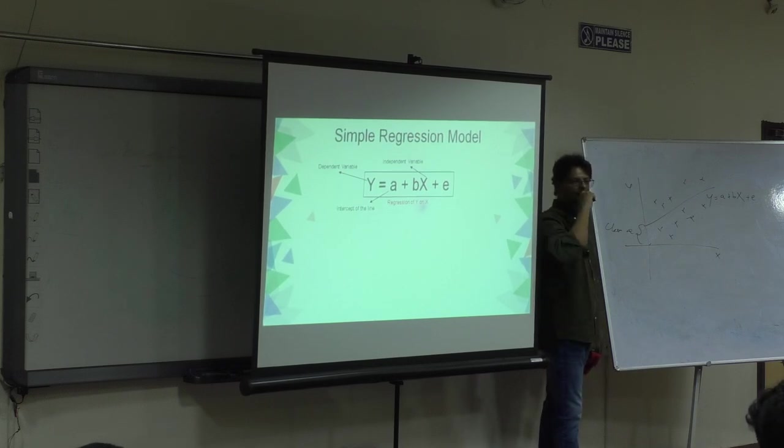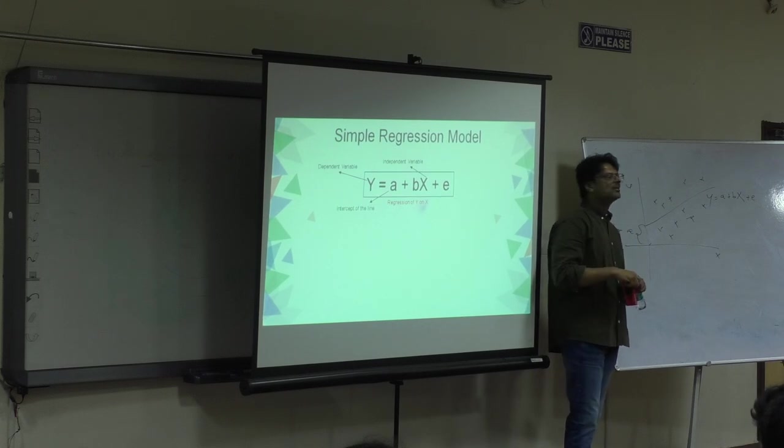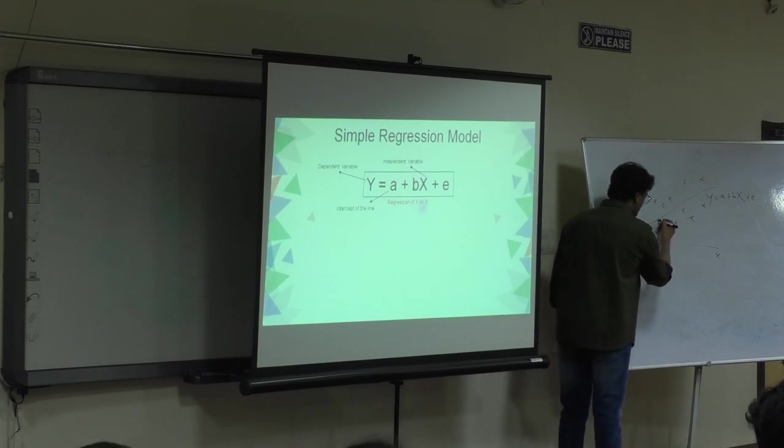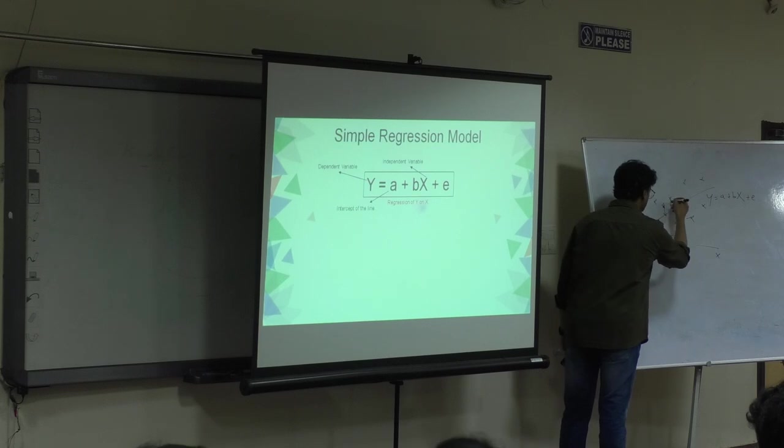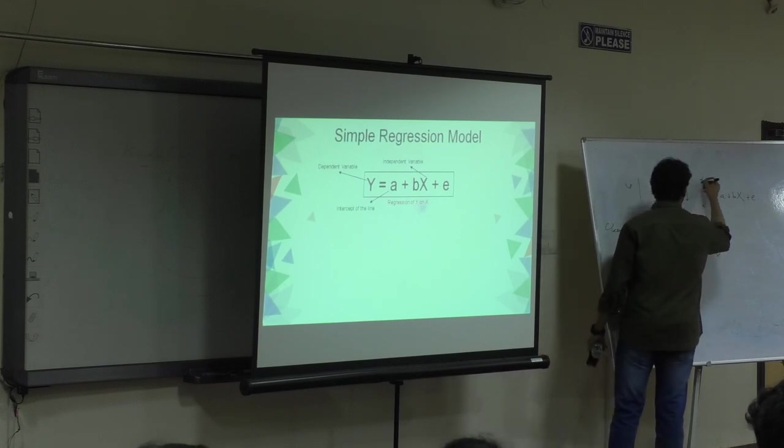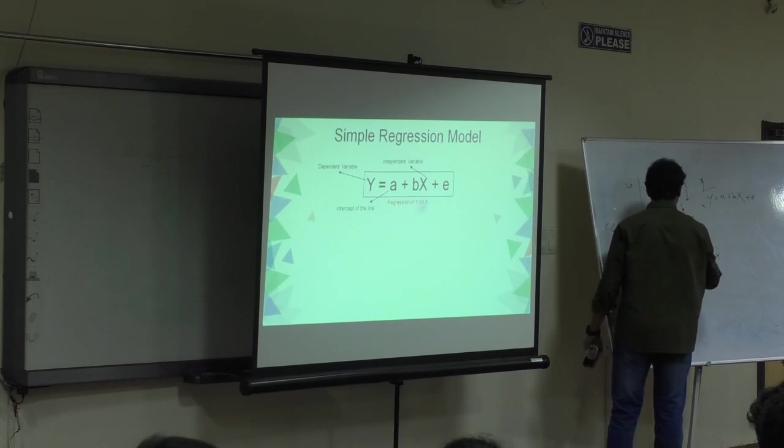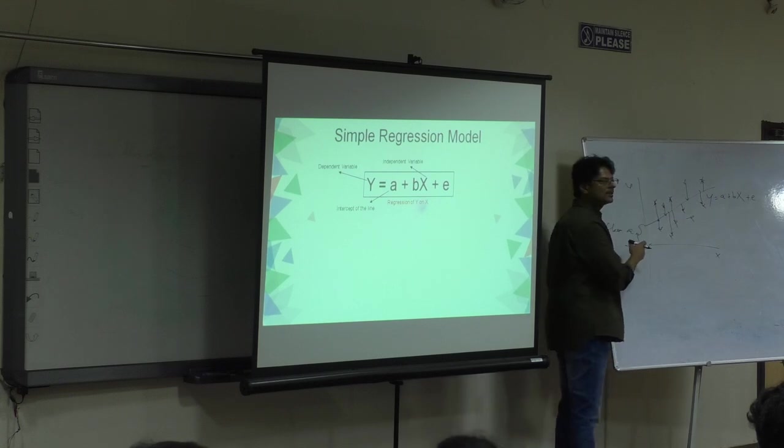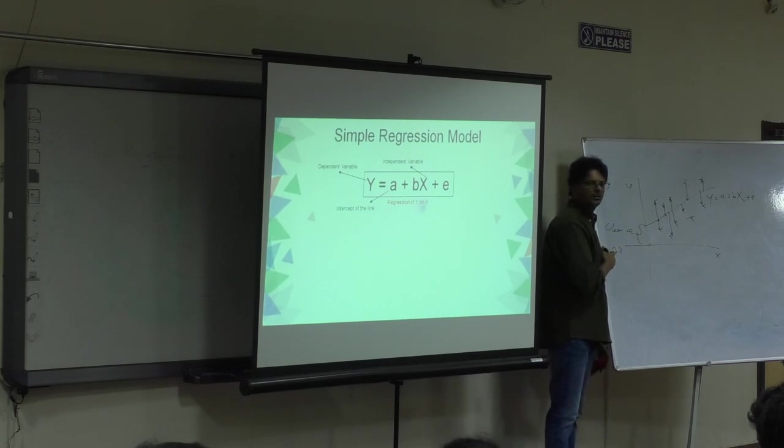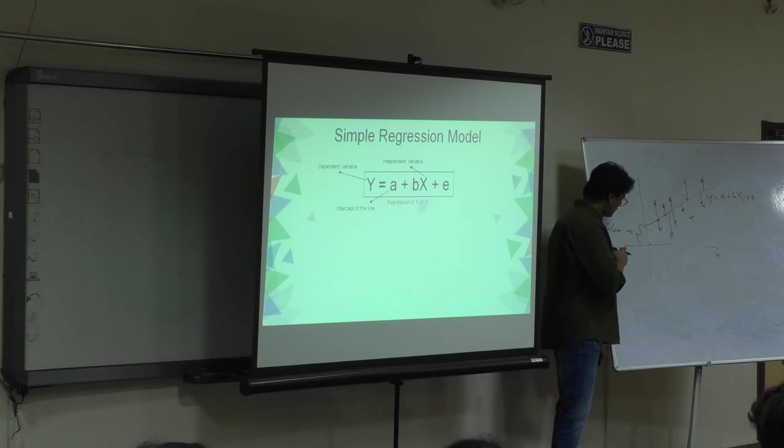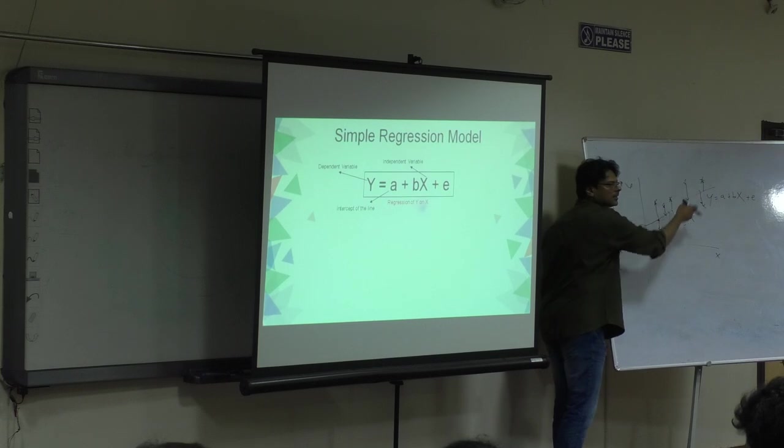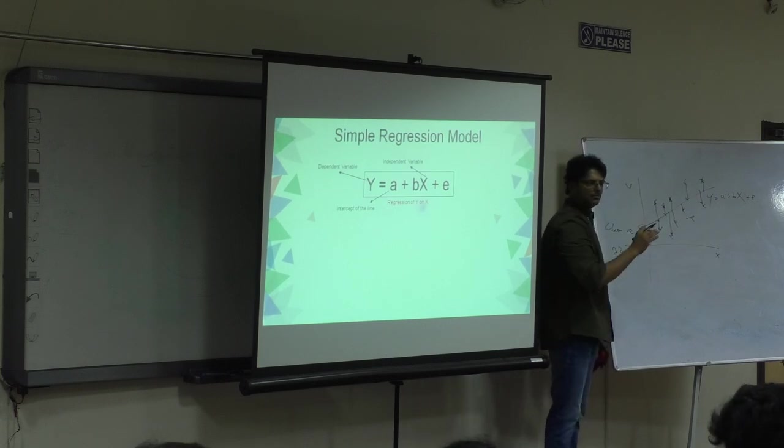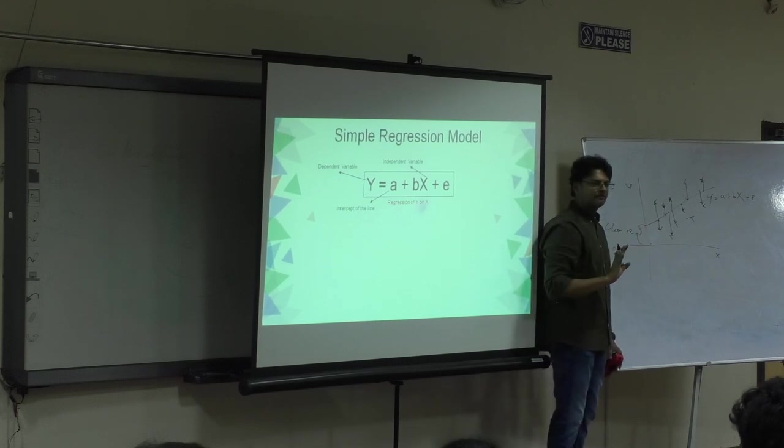Does anybody know what is the least square method? It means the distance between this is the least which is calculated by R square. R is nothing but correlation. This value is the least in this line for each of these plots. That is the line of best fit based on least square method. That's what it means.